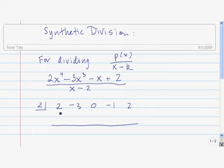Okay, so the next thing we do is we take this number here and we bring it down. Then we multiply. 2 times 2 is 4. We put it below this term. Then we add. Negative 3 plus 4 is 1. Then we multiply. 2 times 1 is 2. Put it below the next term. Add. 0 plus 2 is 2. Multiply. 2 times 2 is 4. Add. Negative 1 plus 4 is 3. Multiply. We get 6. Add. We get 8.